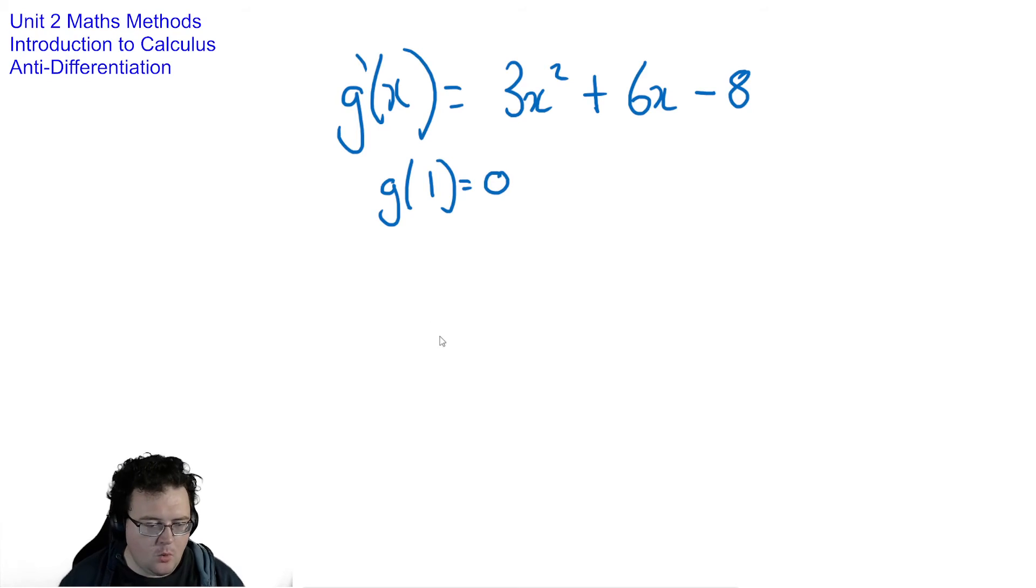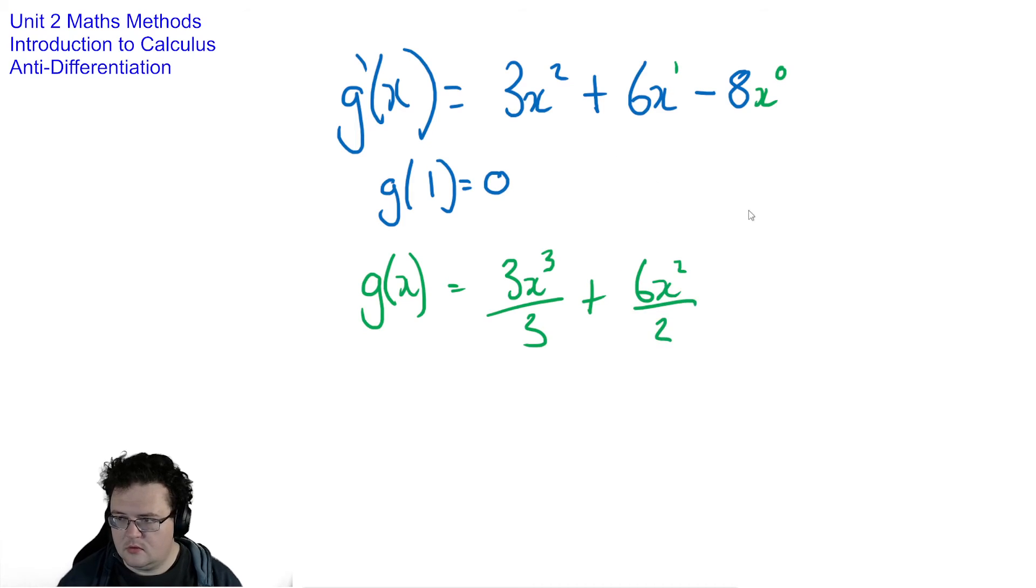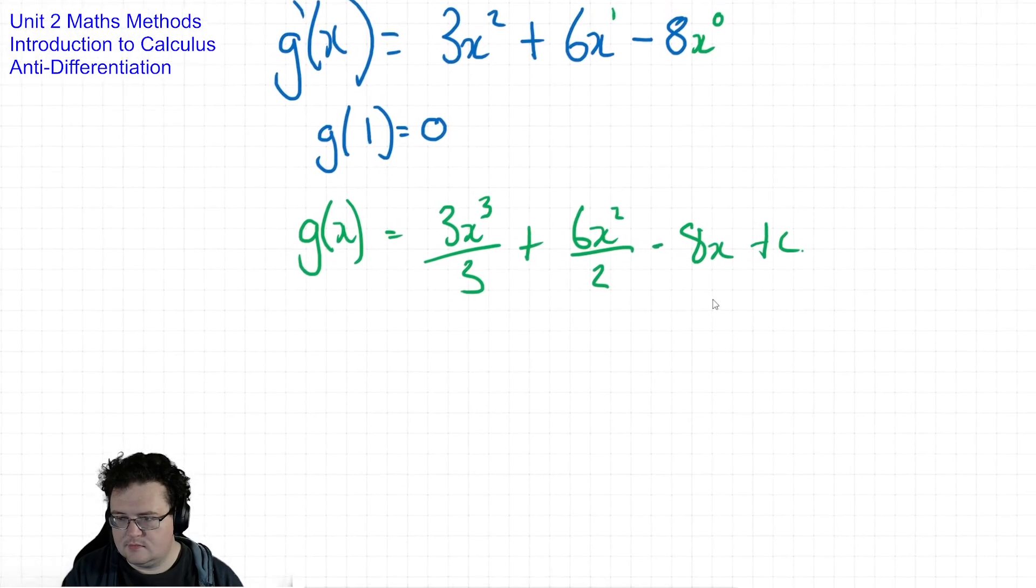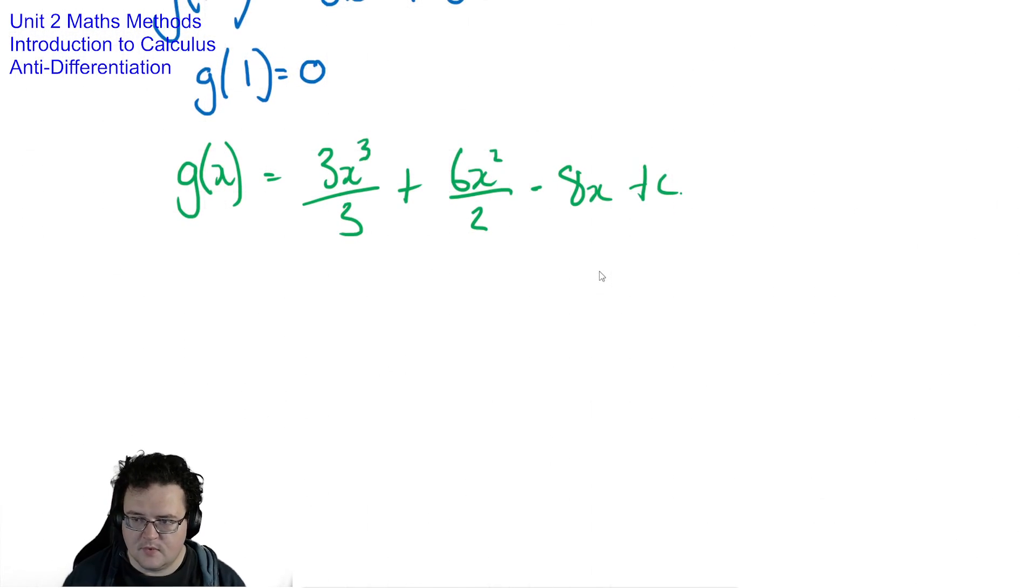So what I'm going to do is just quickly fill in my powers here. So I'm going to now find g of x: add one to the power divided by the new power so that's 3x to the 3 over 3, add one to the power divided by the new power, add one to the power divided by the new power. That's 1 over 1 so we just don't bother with that plus c on the end. Now we cancel down what we can. That 3 and that 3 go away, that 6 and that go away to become a 3. So I now have x cubed plus 3x squared minus 8x plus c.